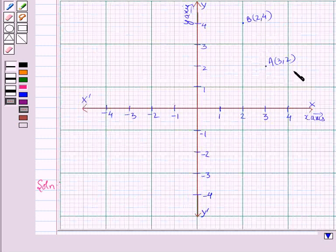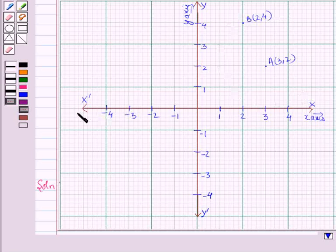And you can see here, the coordinates of the point A are (3,2) and the coordinates of the point B are (2,4). And they are plotted in a graph. xx' is the x-axis and yy' is the y-axis.